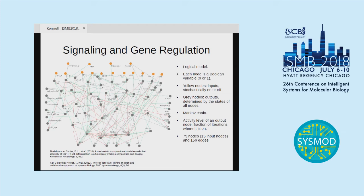Now we move inside each CD4 plus T cell. First, we can see the signaling and gene regulation, and we are using a logical model to describe that. It is an expanded version of a model built by my colleague Banwa, and we're using Cell Collective — a powerful web-based software — to build and analyze the network. In a logical model, each node in the diagram is a Boolean variable, 0 or 1. The yellow ones are inputs that are stochastically on or off; the grey ones are outputs determined by the states of the other nodes. In short, it is a Markov chain, meaning each update depends on the collective state of the model at that moment, and the activity level of each node is the fraction of iterations where it is on.